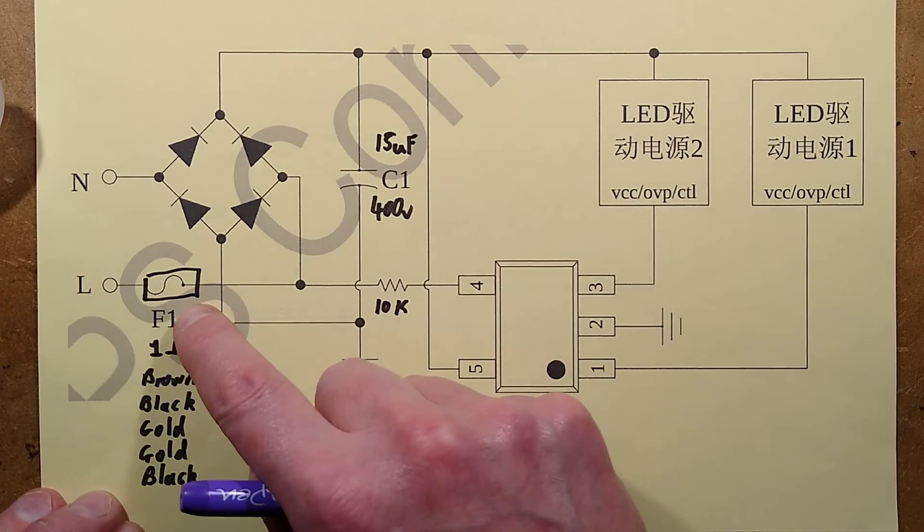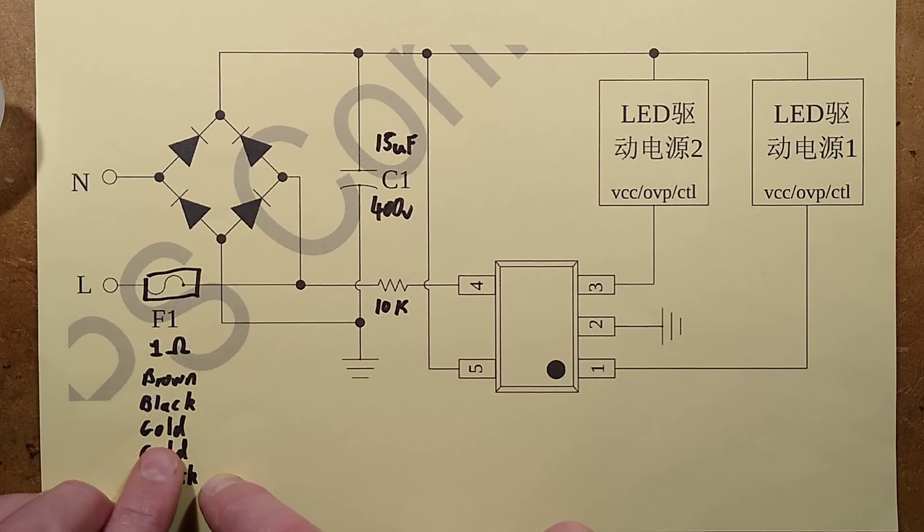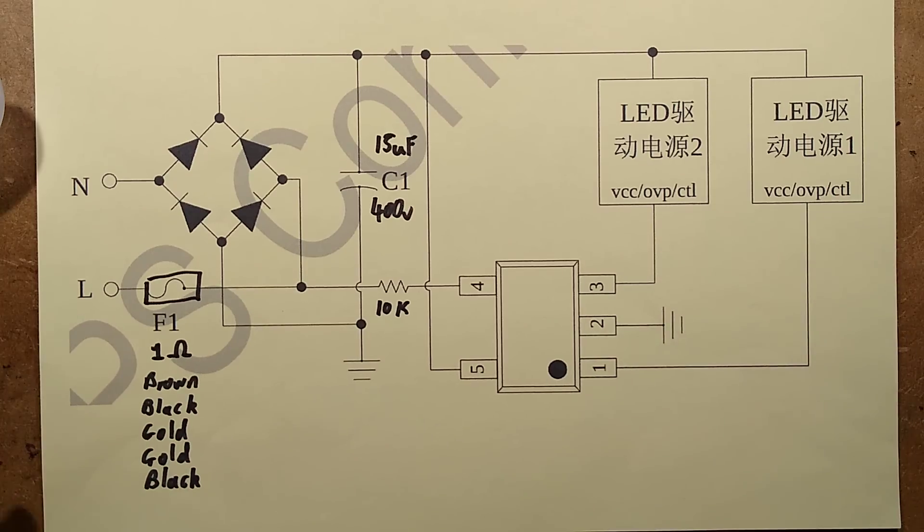There's the odd fusible resistor, which the color code is brown, black, gold, gold, black. I've never seen a color code like that before. Brown, black, gold, gold is not a standard four band color code. I'm guessing really brown, black, gold is what we're looking at here. One, zero, and then a divider to make it one ohm. Anyway.